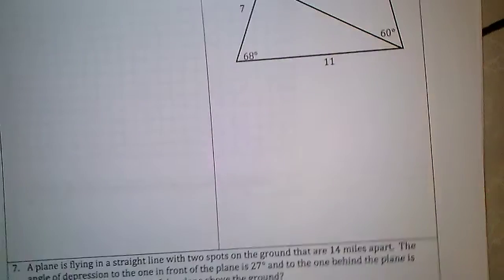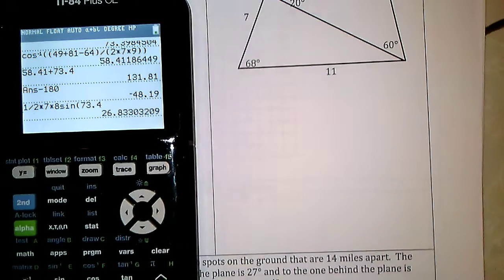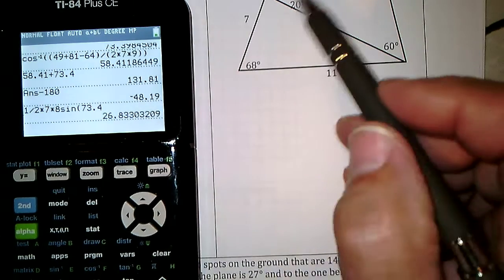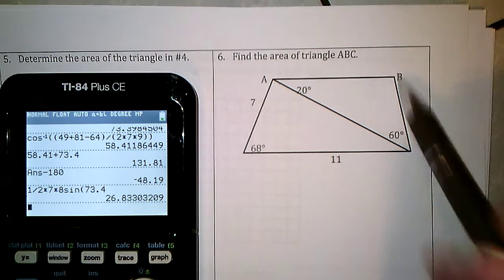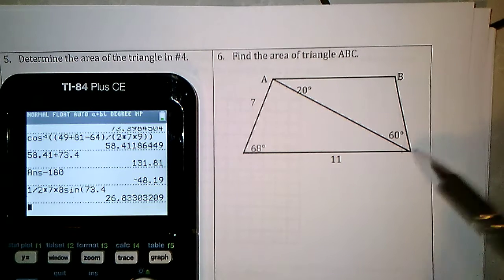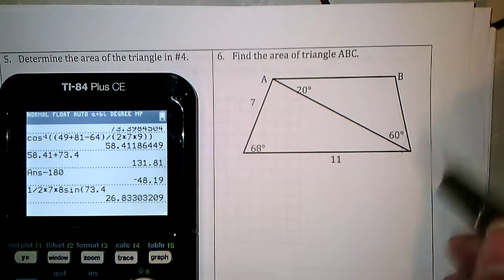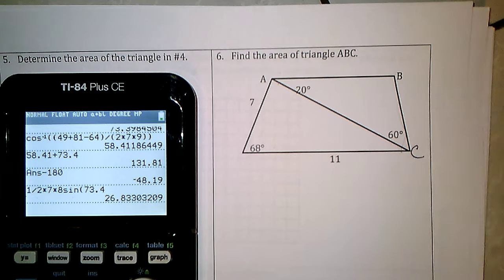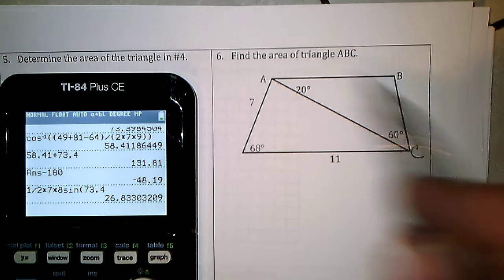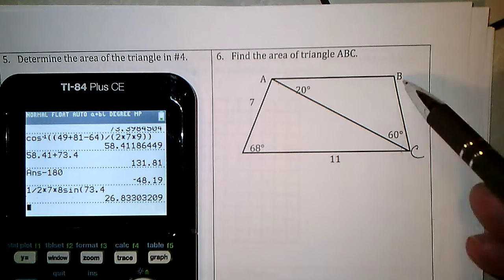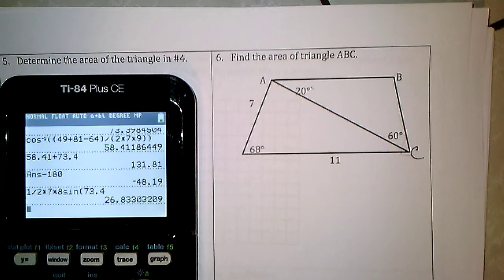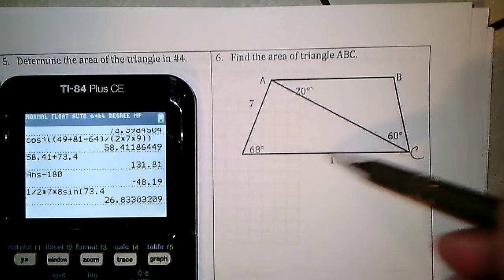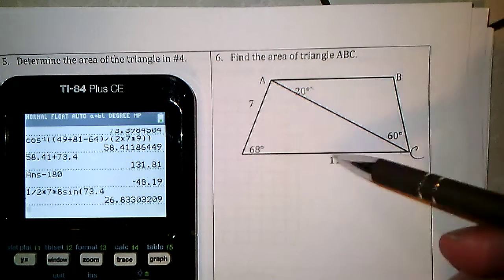This problem says find the area of triangle ABC. This must be C down here that got left off. Triangle ABC is the only way I can have a triangle. I know two angles and no sides, but I can find a side using side-angle-side. So I'll call that missing side X and use the law of cosines.